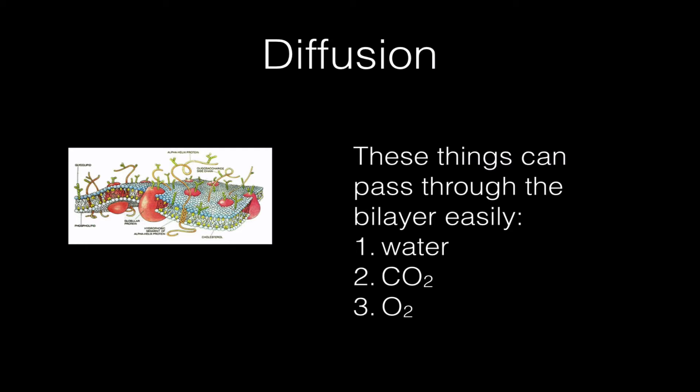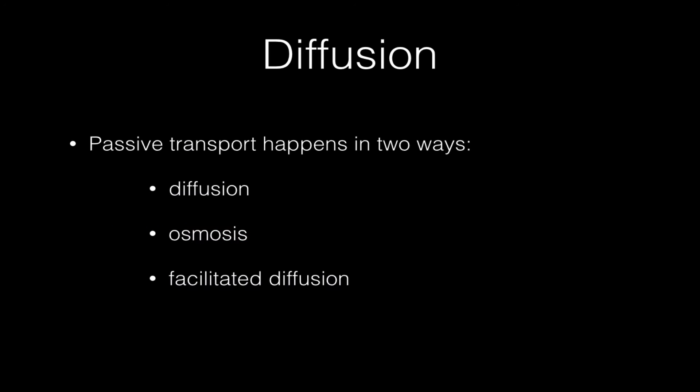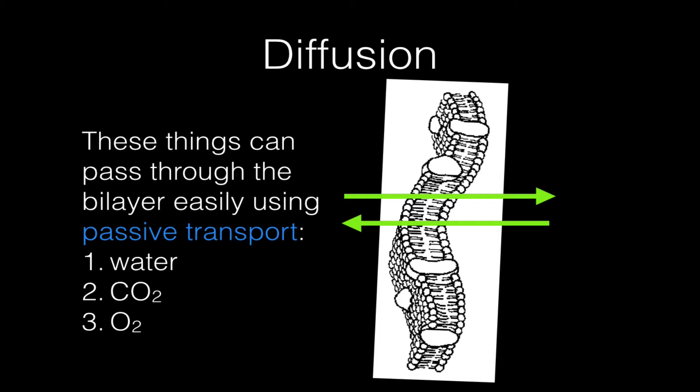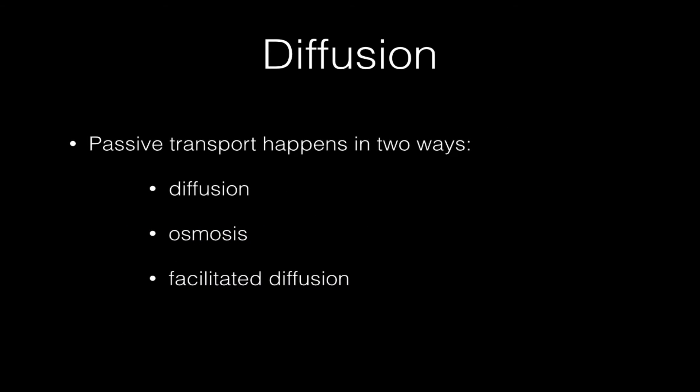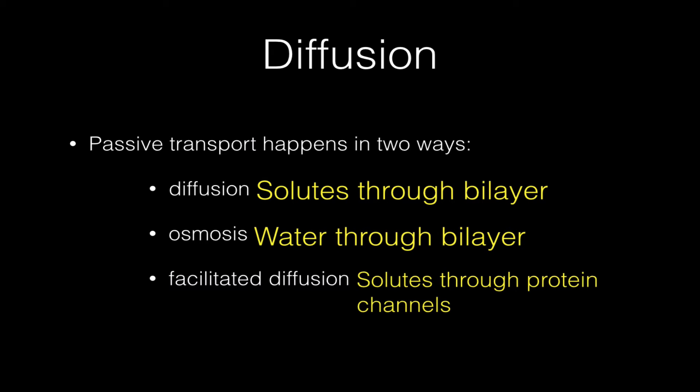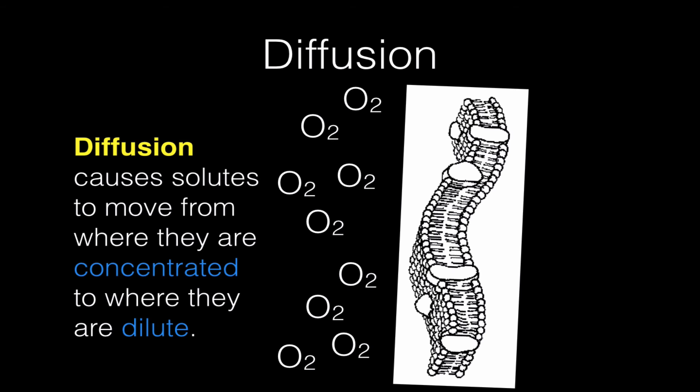These molecules pass directly through the phospholipid bilayer, and because they're moving through with no energy required, we call this passive transport. Passive transport can happen in three ways: diffusion, osmosis, and facilitated diffusion. Diffusion is concerned mainly with the movement of solutes directly through the phospholipid bilayer. Osmosis is a type of diffusion that's only about water. Facilitated diffusion is the movement of solutes that are either too big or, because they're ions with a charge, can't get through the phospholipid bilayer, so they have to pass through embedded proteins, which we call channel proteins.